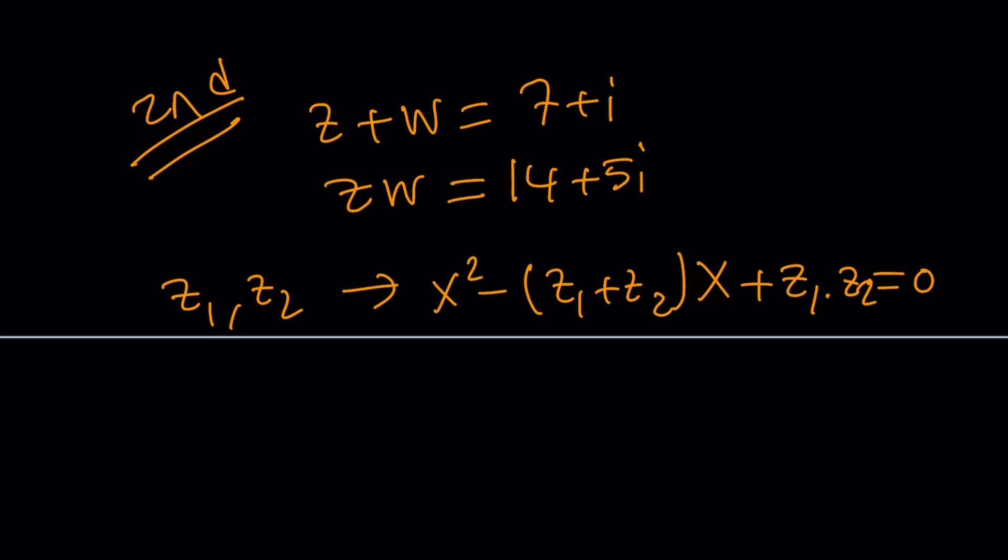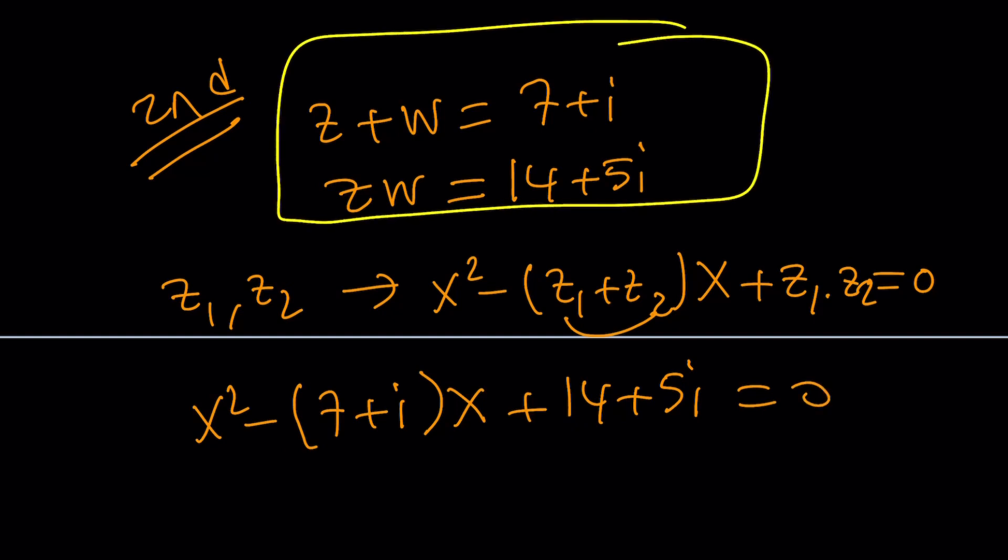Now, let's go ahead and look at the sum. It's going to be X squared minus 7 plus IX. And then the product is going to be 14 plus 5I. So, this system basically gives us a quadratic equation whose coefficients are complex numbers. And let's go ahead and solve it using the quadratic formula.